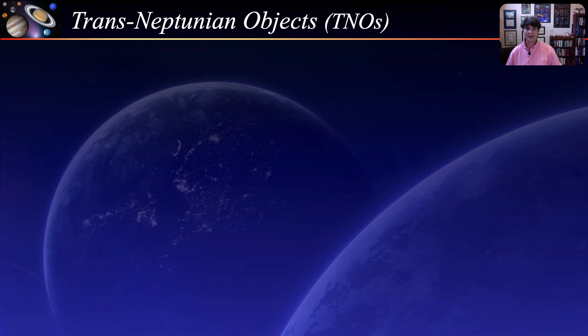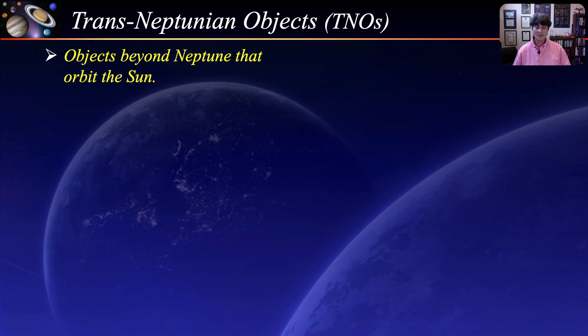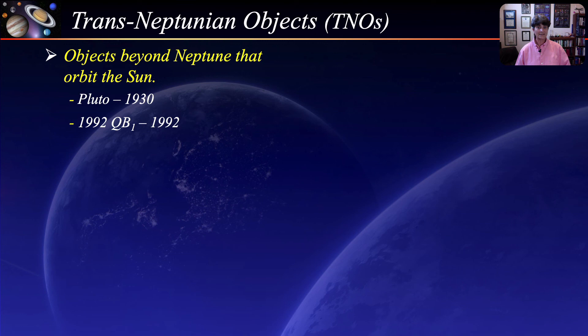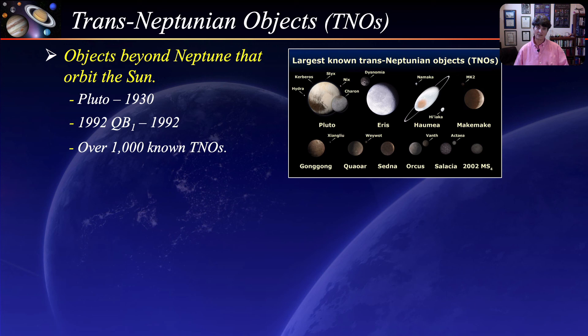Trans-Neptunian objects are objects that are beyond Neptune and still orbit the Sun. They are believed to be debris left over from the formation of the solar system and can tell us much about the origins and evolution of our solar system. Pluto is now the prototype trans-Neptunian object. 1992 QB1 was the first object found other than Pluto, and since then over 1,000 trans-Neptunian objects have been found. Here are the ten largest known TNOs — the top four are recognized as dwarf planets, while the bottom six are nearly certain candidates.